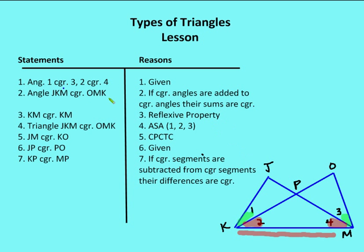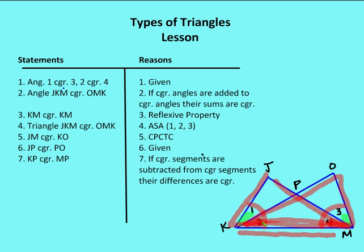Since angle 1 is congruent to angle 3 and angle 2 is congruent to angle 4, angle JKM is congruent to angle OMK — because if congruent angles are added to congruent angles, their sums are congruent. Now I have two triangles, JKM and OMK, that are congruent by angle-side-angle: angles 2 and 4, side KM congruent to itself, and angles (1+2) and (4+3) congruent to each other.